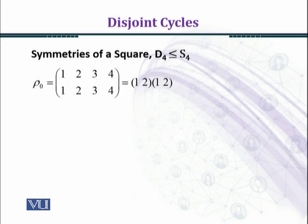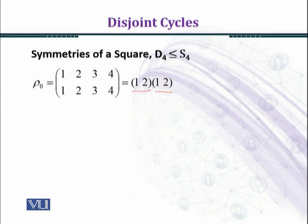The identity element ρ₀ is given by: 1 goes to 1, 2 goes to 2, 3 goes to 3, 4 goes to 4. We can write the identity element as a product of transpositions (1 2)(1 2). Multiplying from right to left, we obtain the permutation ρ₀.